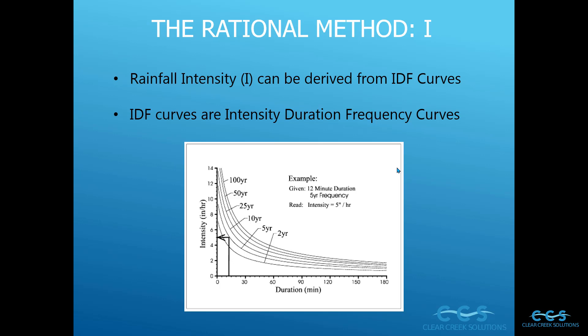If you don't understand what 100-year and 50-year storms mean, essentially it's just the percent chance of a storm occurring in a given year. For example, a 100-year storm has a one percent chance of occurring in a given year, a 50-year storm has a two percent chance, and a 25-year storm has a four percent chance of occurring in a given year.